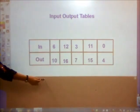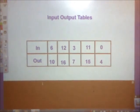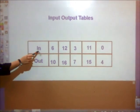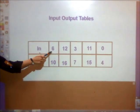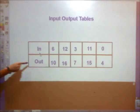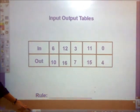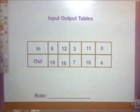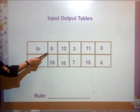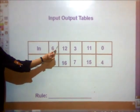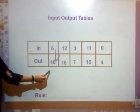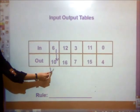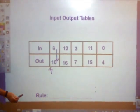Let's look at our first one. Here's my table. Here's my in. Whenever I put a number in, I always have to get a number out. First, I need to find the rule. When I look at 6, I know that 6 to 10, my number is getting bigger. I'm going to put an addition sign here to remind me.